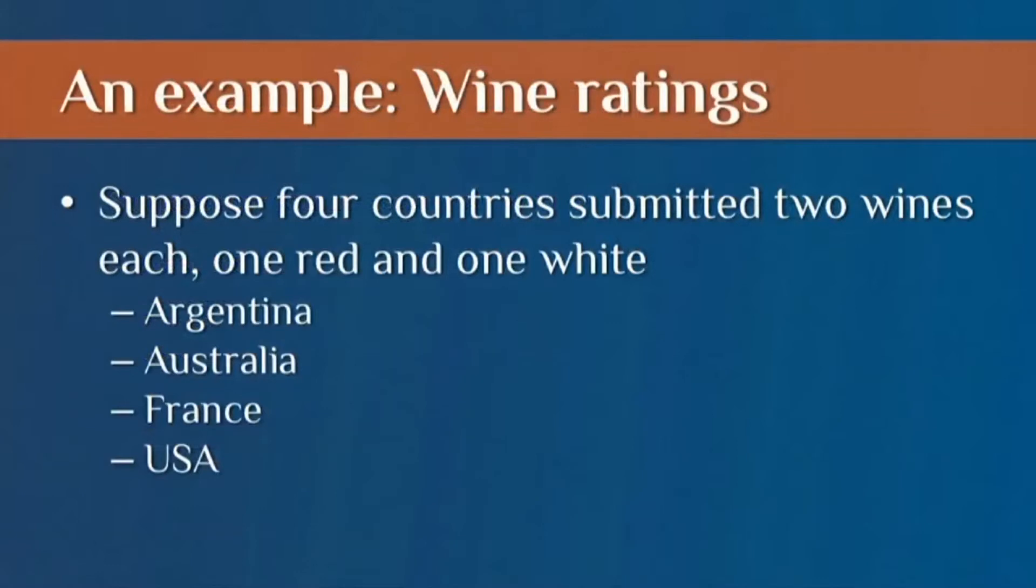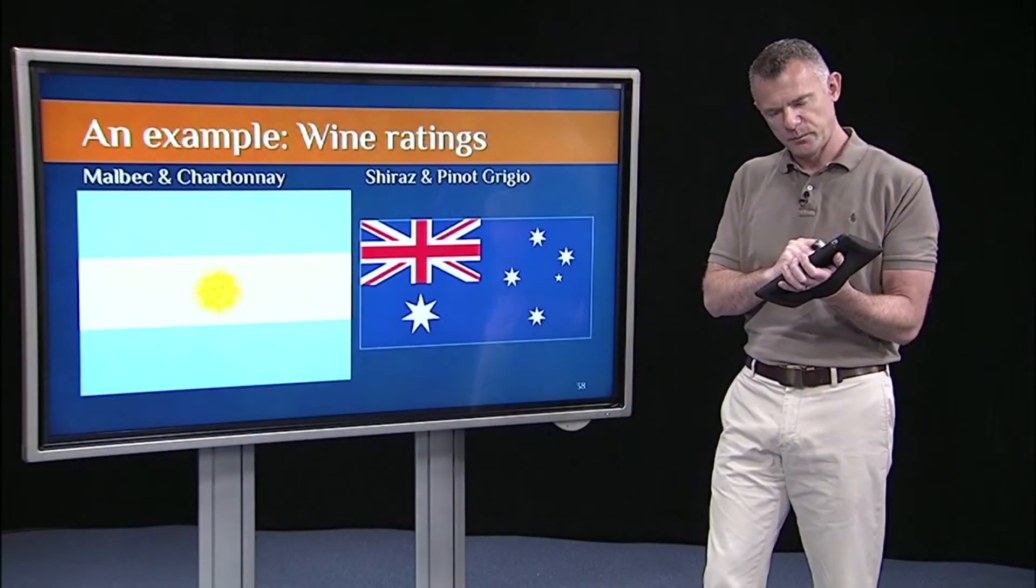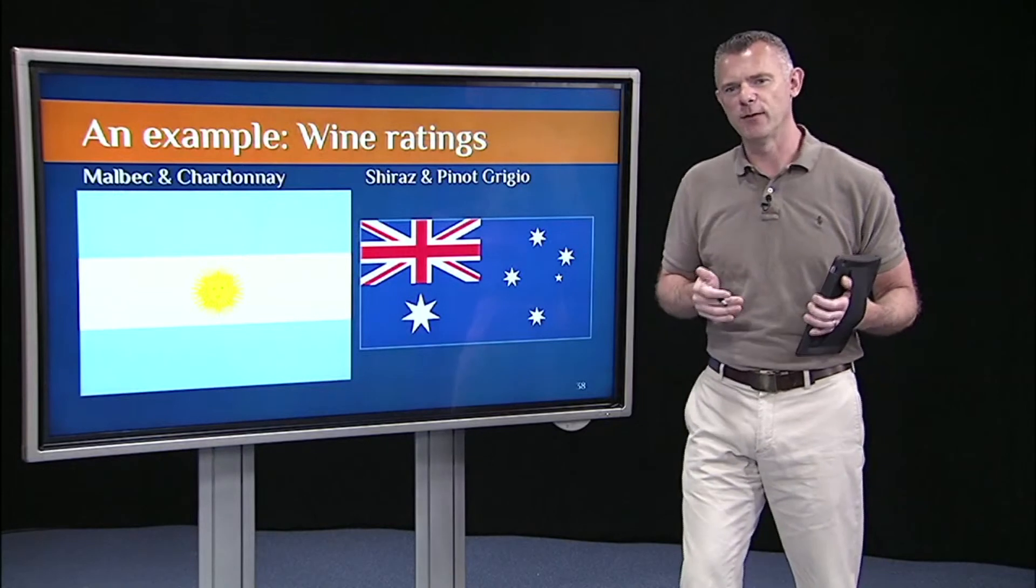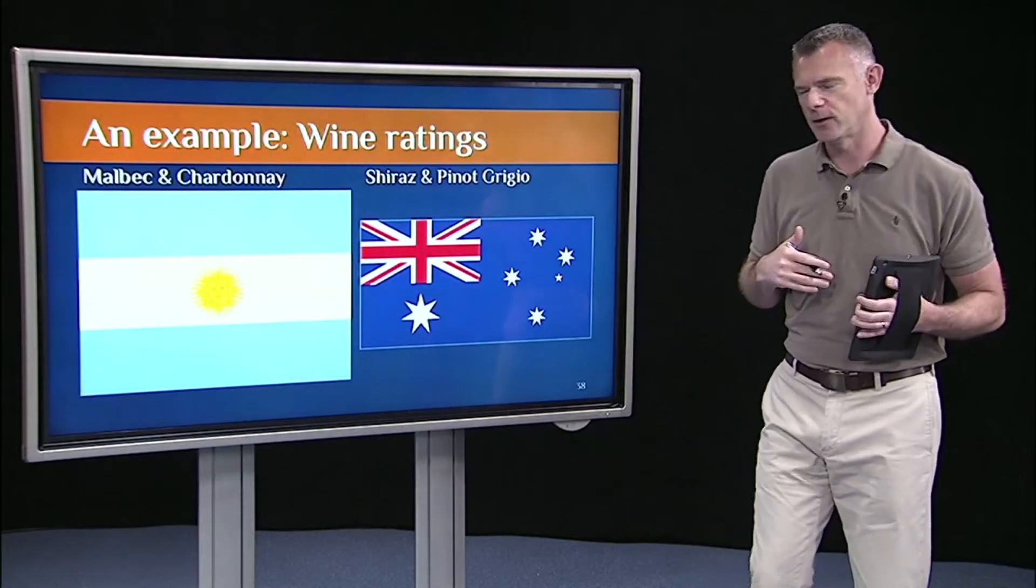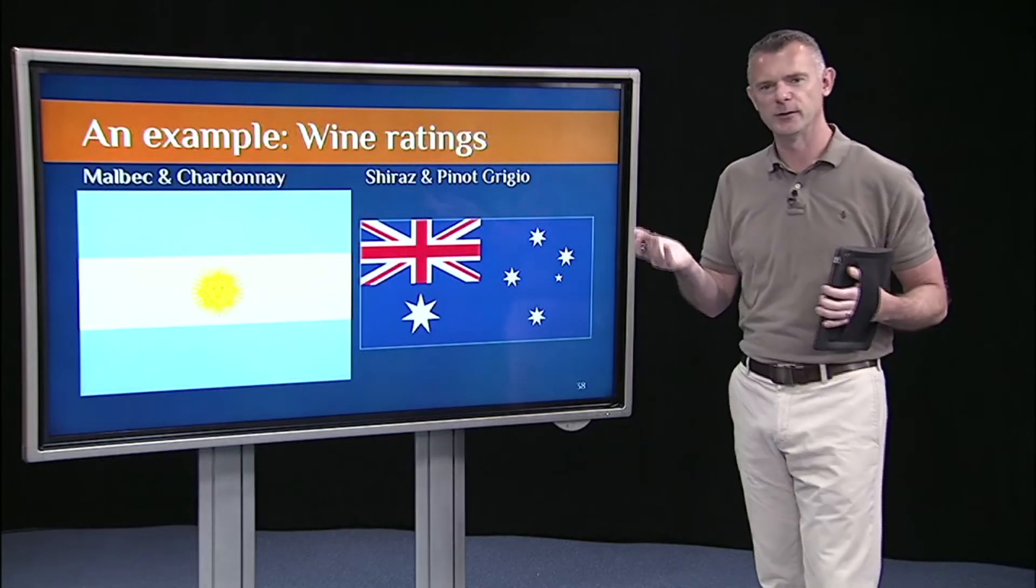And let's say we had four countries submit two wines each. So Argentina, Australia, France, and the US. Each one submitted a red and each one submitted a white. We, again, just did this for fun. My assistant on this is from France. And so we had a lot of fun doing this example.